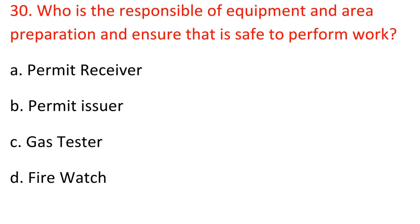Question 30: Who is responsible for equipment and area preparation and ensuring that it is safe to perform work? A. Permit receiver. B. Permit issuer. C. Gas tester. D. Firewatch.